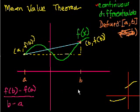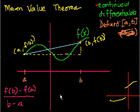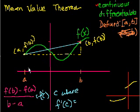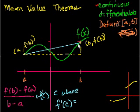So what does the mean value theorem tell us? It says if f of x is defined over this closed interval from A to B, and f of x is continuous and differentiable, that there must be some point C — there has to be some point C where f prime of C is equal to that average slope. And C has to be between A and B. There's some point between A and B where the derivative at C — the instantaneous slope at C — is exactly equal to the average slope over that interval.